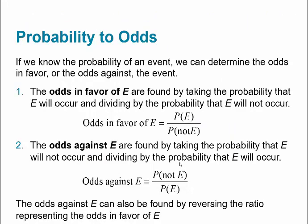Now let's talk about odds. If we know the probability of an event, we can determine the odds in favor of it or the odds against it. The odds in favor of an event are found by taking P(E) divided by P(not E). The odds against it are found by taking P(not E) divided by P(E) — just the flip of each other. The odds against E can also be found by reversing the ratio of the odds in favor.